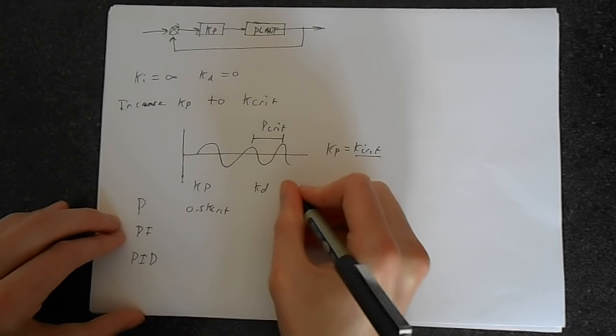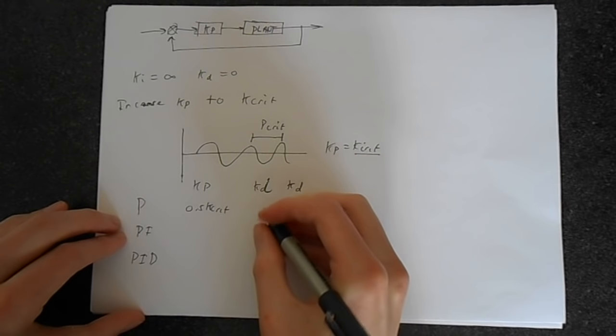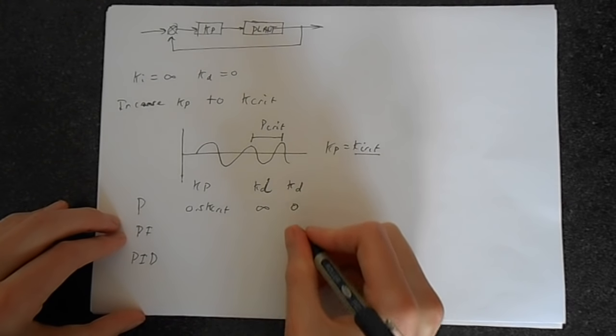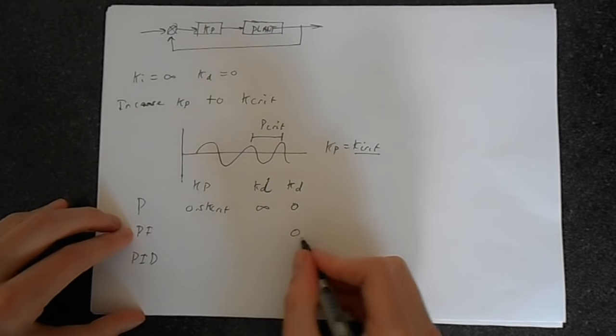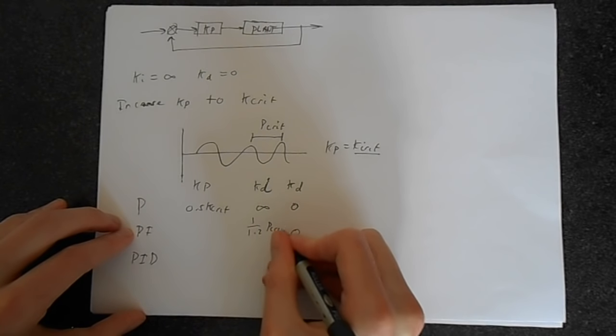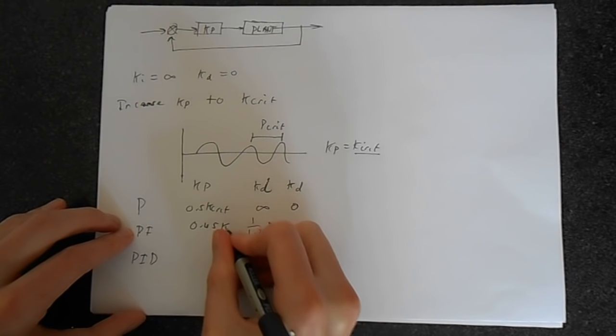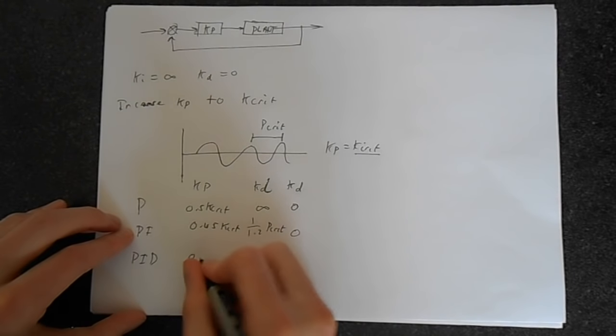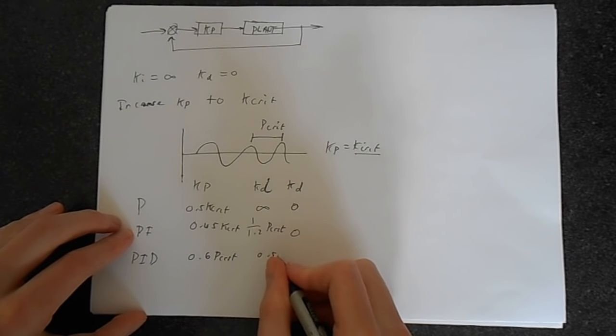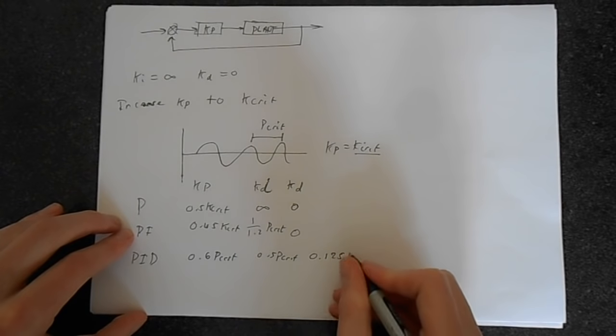So KP is 0.5 times kcrit. In this case, we've got KI here. So infinity, and then 0. Of course, no D. 0 here, no D. 1 over 1.2 pcrit. Here you've got 0.45 kcrit. 0.6 pcrit. 0.5 pcrit. And then 0.125 pcrit.